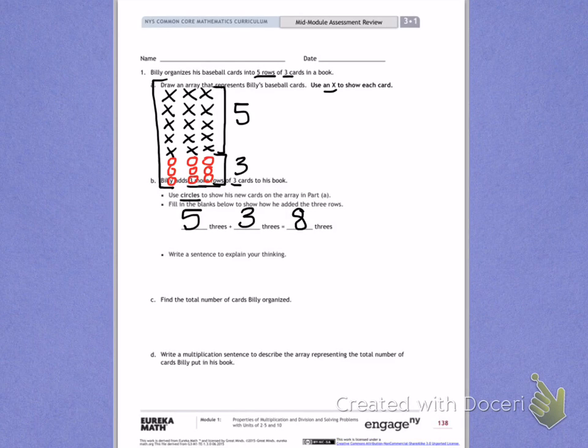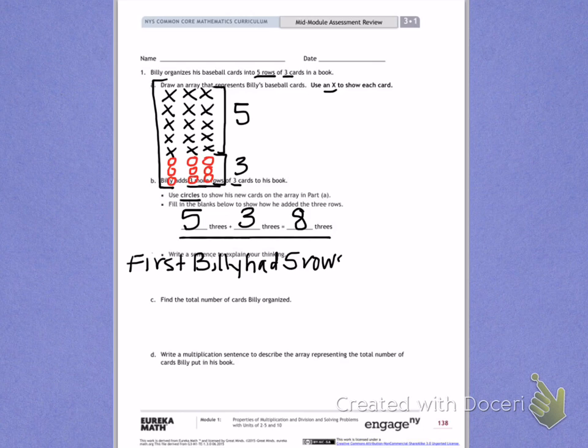Next, I have to write a sentence to explain my thinking. I'm going to write a sentence to explain what these numbers mean. So I would like to write, first, Billy had five rows of three.